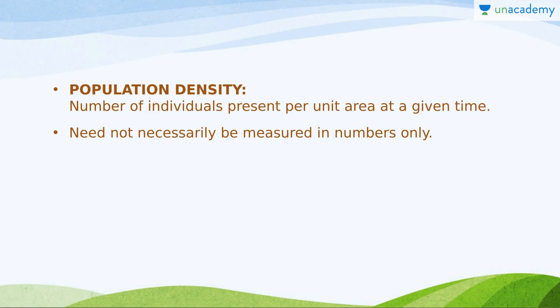Population density is the number of individuals present per unit area at a given time. It is not strictly the count of individuals because in some cases counting is not possible — for example, you can't count individual algae, so you use biomass; for bacteria, we count colonies. So generally it is the number of individuals, but in some instances it is not exactly that. That's it from this lesson, thank you.